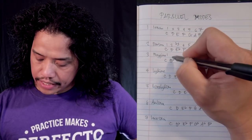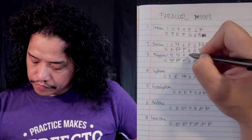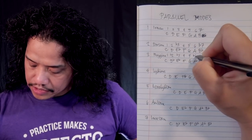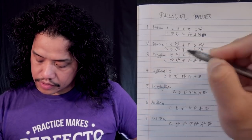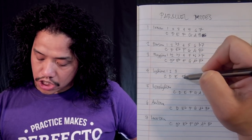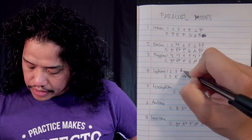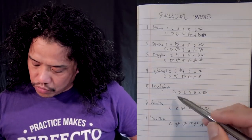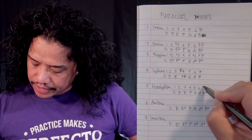For Phrygian: we have a flat two (D♭), a flat three (E♭), the fourth and fifth are the same, a flat six (A♭ versus A), and still a flat seven. Lydian: the first, second, and third are the same. The fourth degree is where we encounter a difference — F# in C Lydian versus F natural in C Ionian — so Lydian has a sharp four. The fifth, sixth, and seventh are the same. For Mixolydian, degrees one through six are all the same as Ionian, and we have a flat seven.